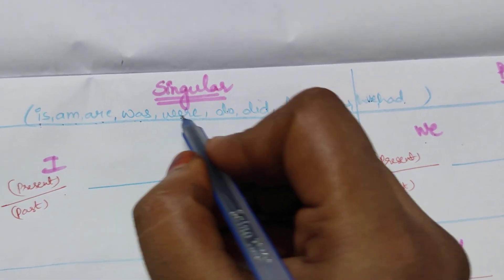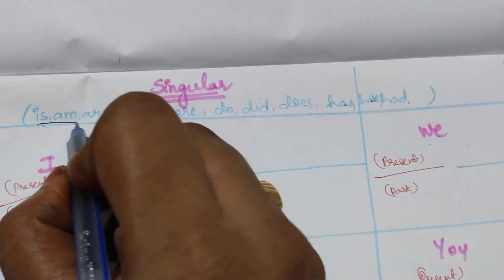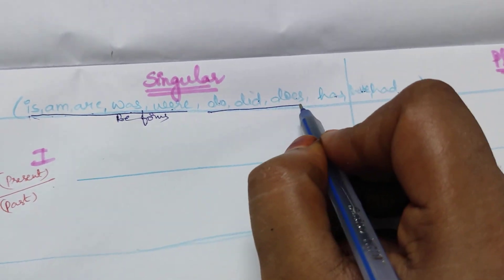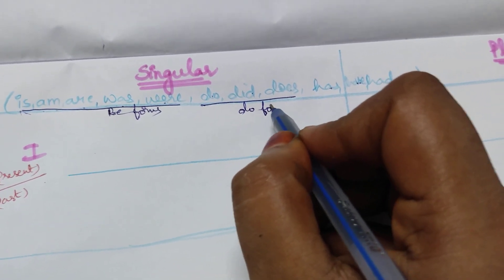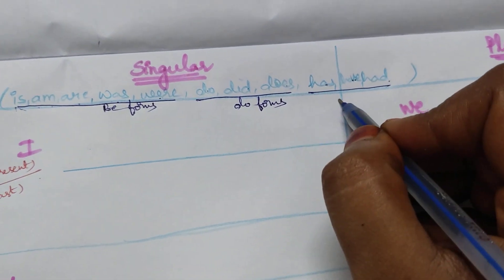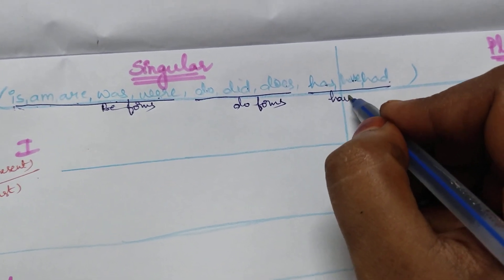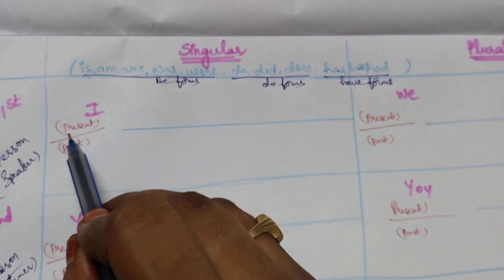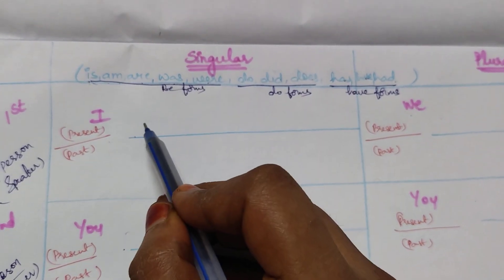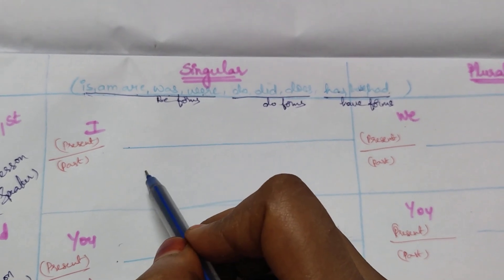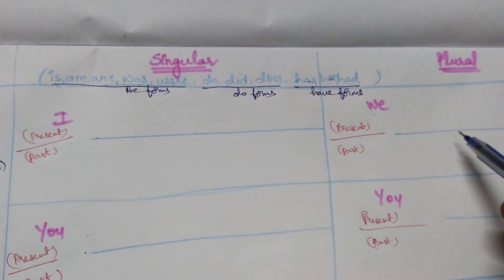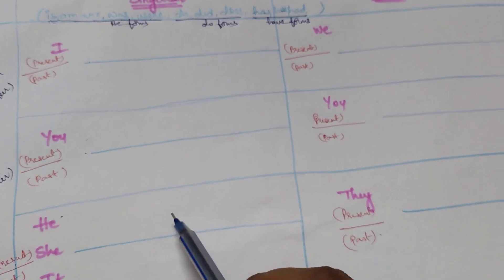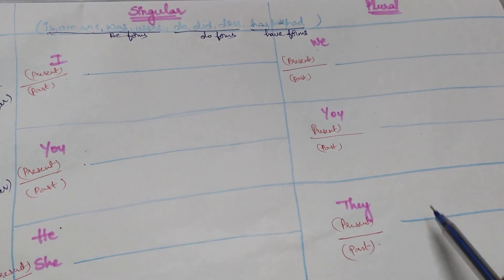Is, am, are, was, were - these are called as be forms. Now our question is, I have written clearly, the line above is present, the line below is past. Same thing. Above present, below past. Present, past.